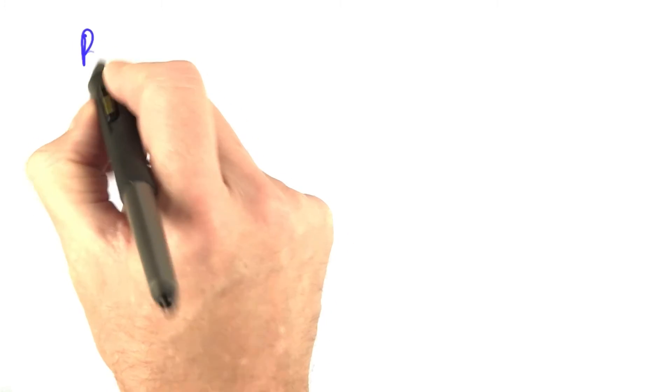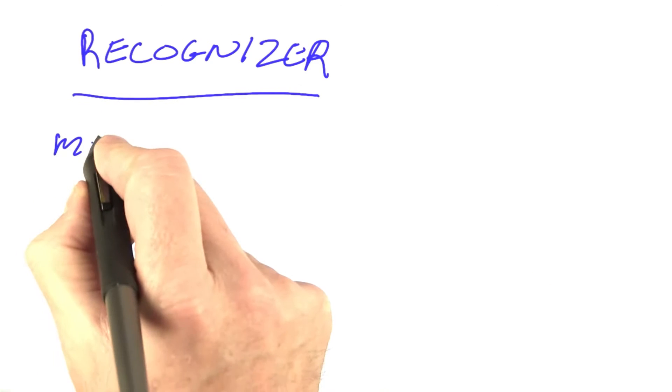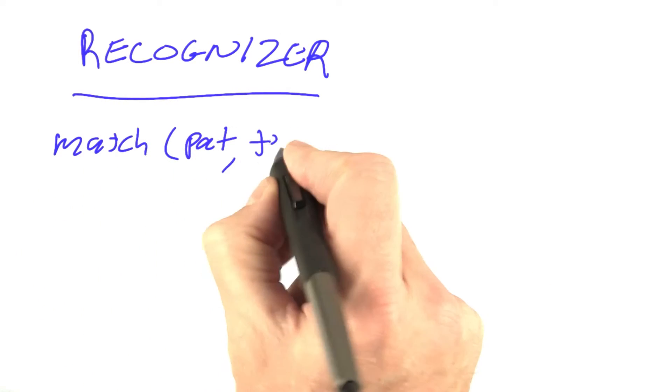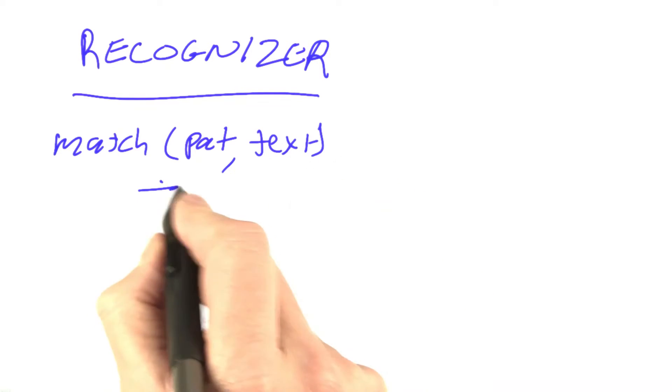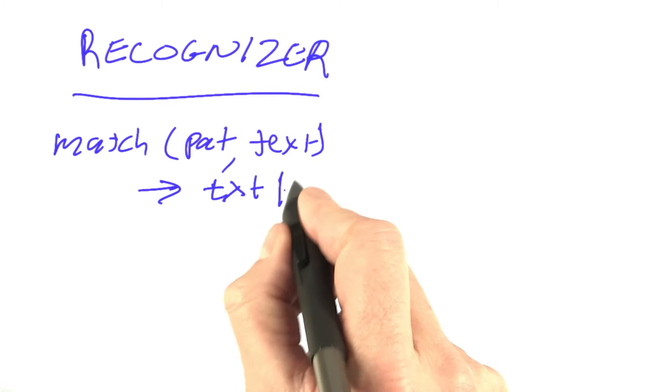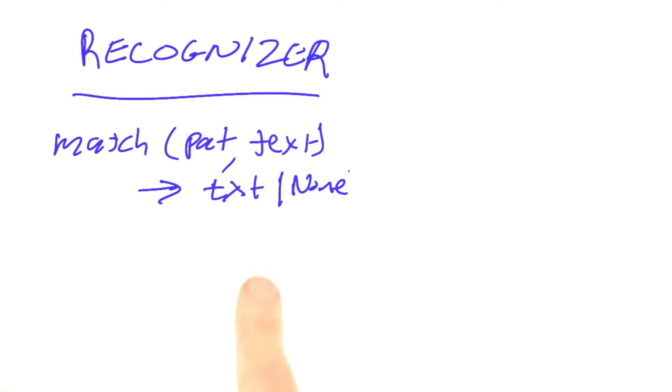So far, what we've done is called the recognizer task. We have a function match which takes a pattern and a text and returns back a substring of text if it matches or none. It's called a recognizer because we're recognizing whether the prefix of text is in the language defined by the pattern.